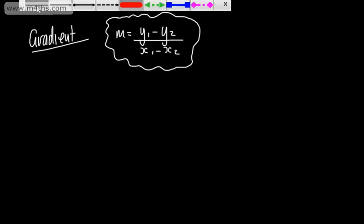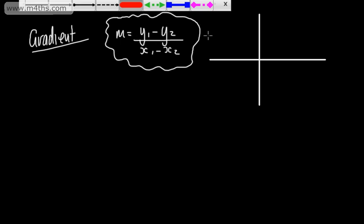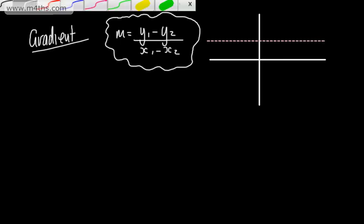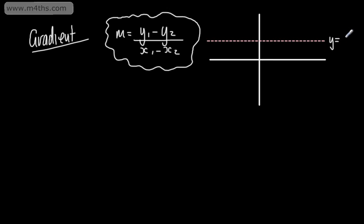Let's go back a bit and start off with horizontal and vertical lines. If we have a horizontal line — this could be the line y is equal to 2 — this will have a 0 gradient. If I just picked a point here and a point here, this might be the point (2, 2) and this might be (4, 2). All I'm going to do is substitute these in and show that the gradient of this line is going to be 0.